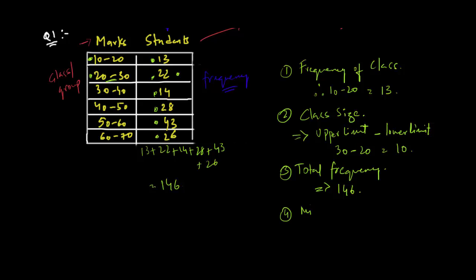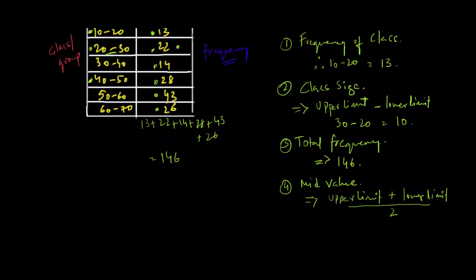And the next term that you will hear is mid value. Now, by the name you can figure out they are asking for the value that is in the middle. So, whenever they are asking you the mid value, they are actually referring to the mid value of the class. So, the easiest formula for that is you will take the upper limit of the class, then you add it with the lower limit of that same class, and you divide both of them by 2. I need a bit more space. So, let's take an example of 40 to 50 class. So, here the upper limit is 50 plus lower limit is 40 divided by 2, which gives us 90 by 2. And you cancel that, you get 45. We conclude that by saying 45 is the mid point between 40 to 50 class.